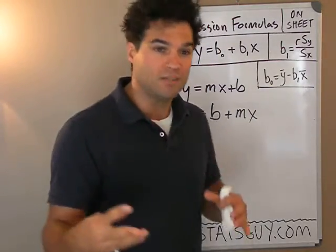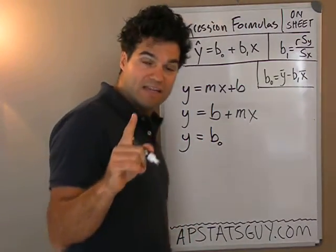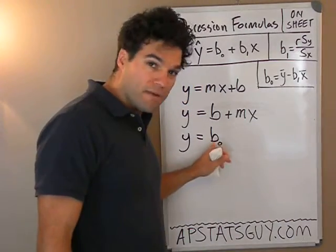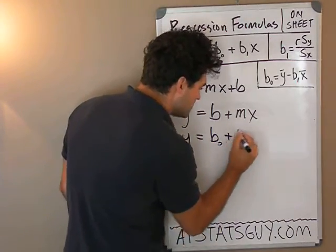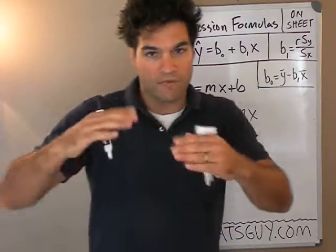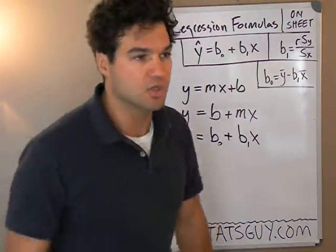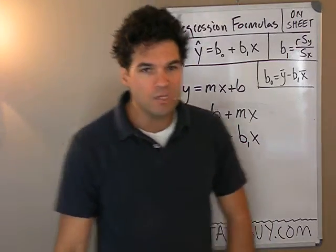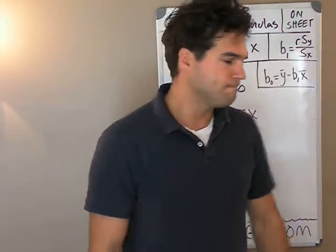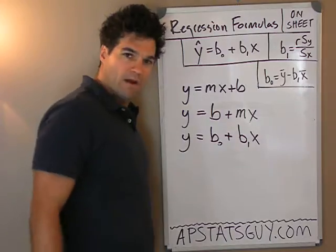To help you remember which is which, it's written like this: y equals b-naught — with a little zero — and you can think of it as b-old, like the old b. The old b was the y-intercept, so this b-naught is the y-intercept. Plus b₁ times x — b₁ is now what we're calling m, the slope. B₁ tells you: for every increase of one unit in x, how much y is changing. That's what slope tells you.